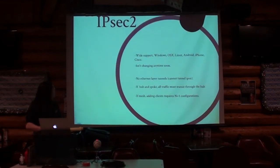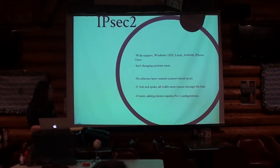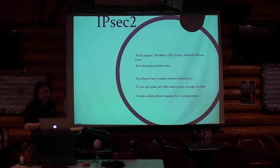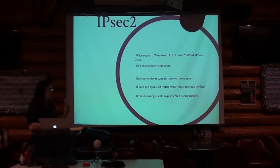Next we have IPsec, which has huge wide support and has been around forever. There's clients everywhere and it isn't changing anytime soon, so there's no real backward compatibility concern. Cisco is supported — though there's some stuff I can't do with it. No Ethernet layer tunnels, you can't tunnel IPv6. And the same considerations as OpenVPN: hub-and-spoke and n-plus-one configuration, so not really useful for a mesh VPN setup.